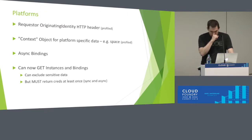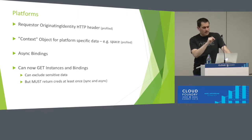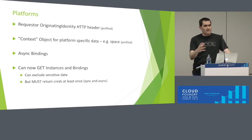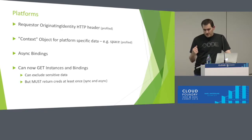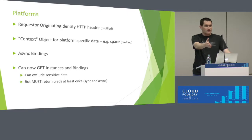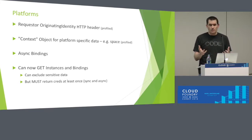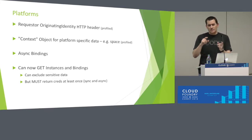We added an Originating Identity Header — an HTTP header that contains the user ID of the person who originated the request. In the CF world, if you do a CF create-service, this header now includes your user ID. This allows service brokers to do additional checks — for example, maybe Morgan is allowed to create a service but Swetha cannot delete it. Or you could use it for auditing. It's required for the platform to send, but optional for the broker to do anything with it.